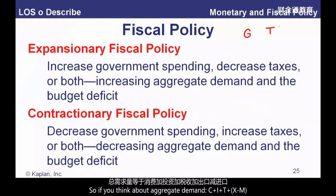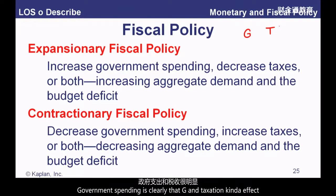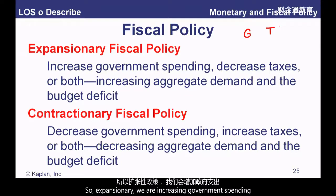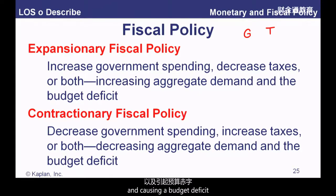If you think about aggregate demand — C plus I plus G plus X minus M — government spending is clearly in there as the G, and taxation can affect consumption. Expansionary fiscal policy means increasing government spending, decreasing taxes, kick-starting aggregate demand, and causing a budget deficit.